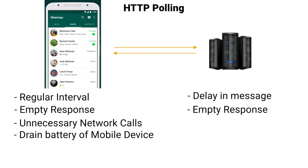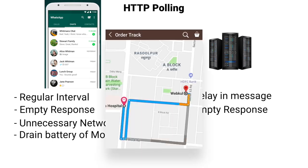However, for another example like a location update for a delivery boy coming to deliver food, we are fine with a two-second delay in the location update. So HTTP polling can be used — I'm not saying it is recommended, but it can be used for these types of use cases. That's all about HTTP polling.